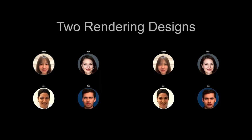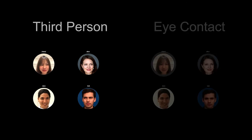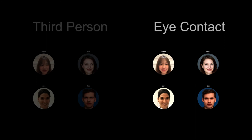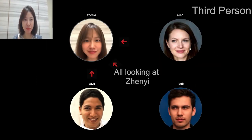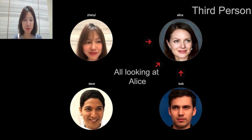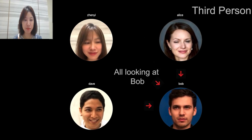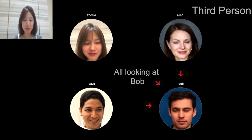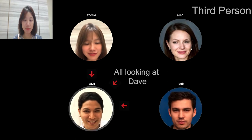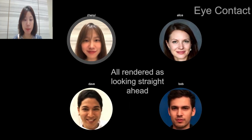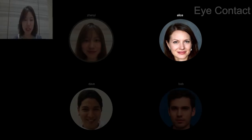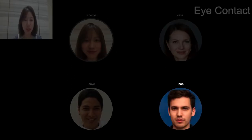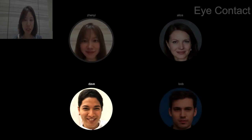We further design two variants in GazeChat's eye contact rendering: third-person perspective and eye contact perspective. In the third-person perspective design, GazeChat treats all gaze information the same, so the final presented gaze angle is calculated according to the source viewer placement and destination viewer placement. Regarding eye contact perspective, when a user gazes at the viewer, GazeChat will render this user's profile as looking straight ahead, so the viewer feels as though the user is looking into his or her eyes.